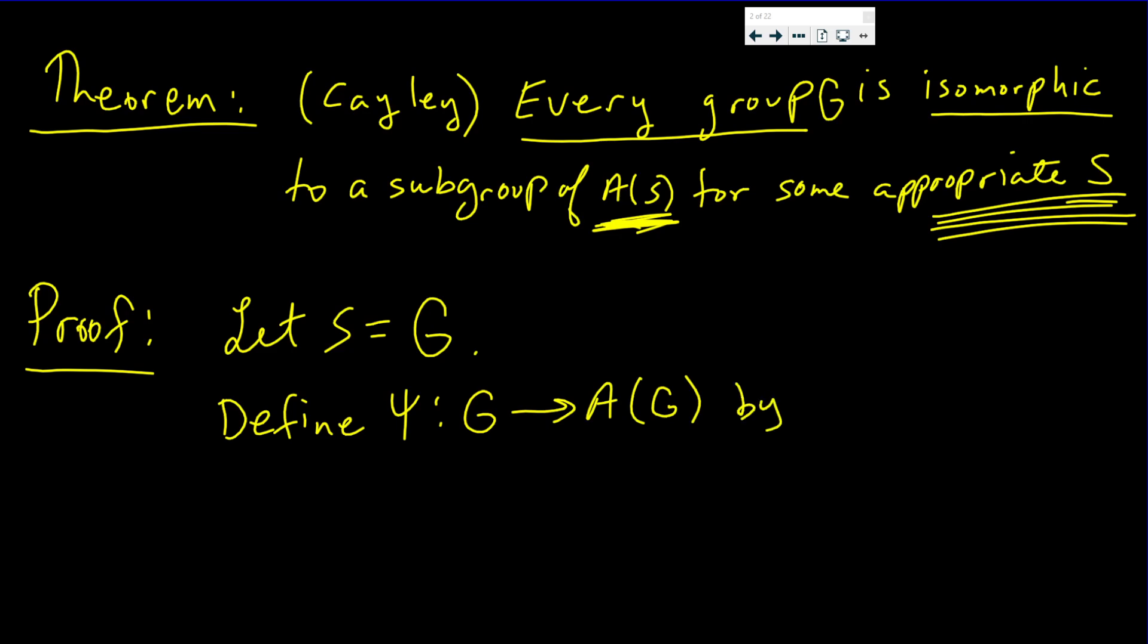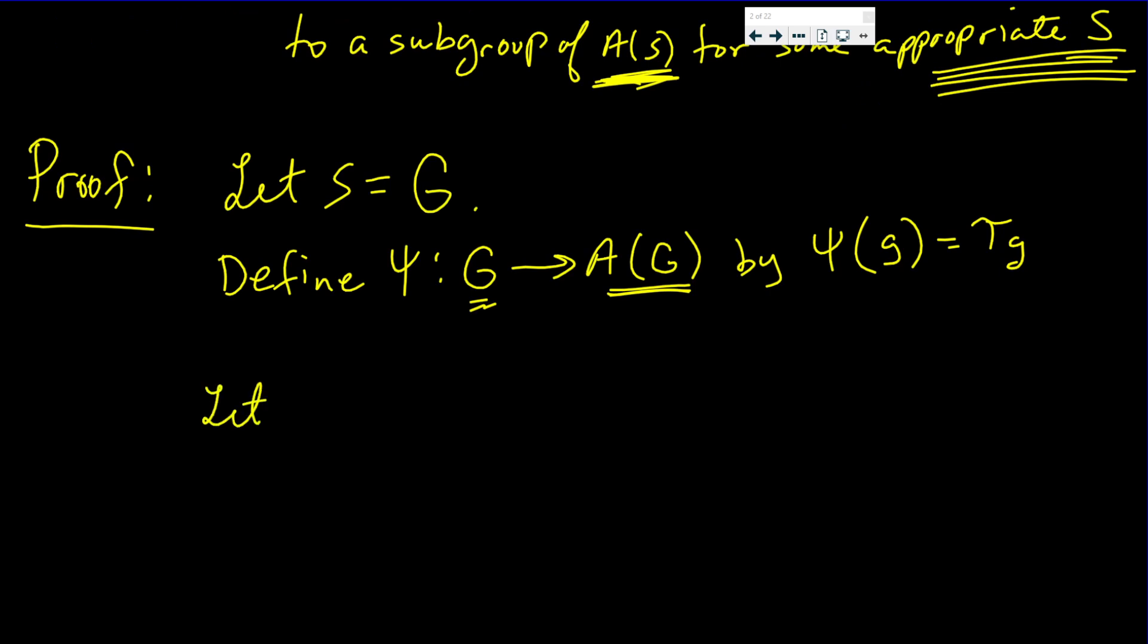We define it by φ(g) = τ_g. I want to show that this is an isomorphic mapping. First I have to show it's a homomorphism. So let g₁, g₂ be in φ. I need to show that φ(g₁g₂) = φ(g₁)φ(g₂). Well we know this is one element in G. When you compose two elements in G you get one element.